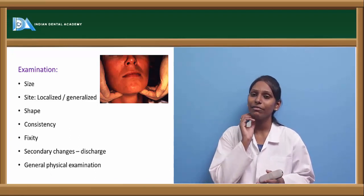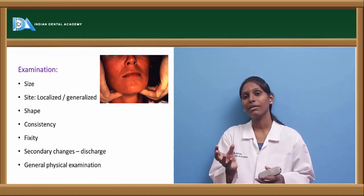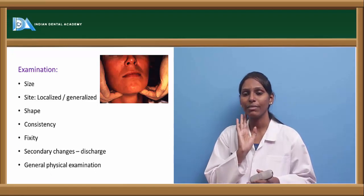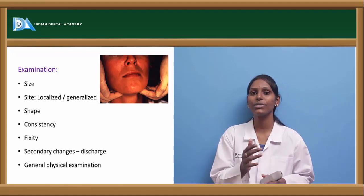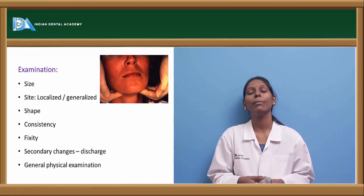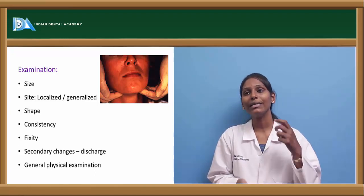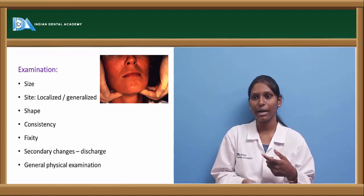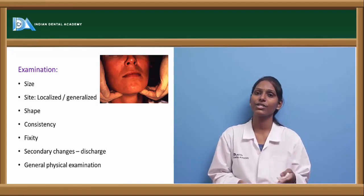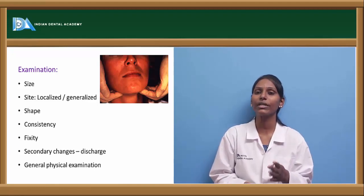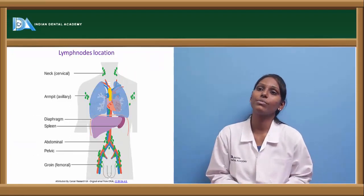Next is fixity. Normally the lymph nodes are mobile in the soft tissue. If the lymph node is fixed to underlying tissue — underlying muscle or connective tissue — this fixity is usually because of infiltration, indicating a malignant process. Usually some lymph nodes will be secondarily infected, leading to any discharge from that region. Associated with these features, general physical examination will also be helpful in coming to a diagnosis.